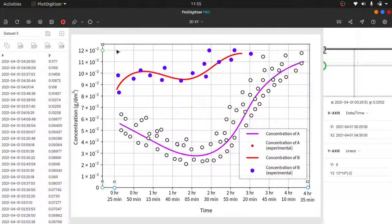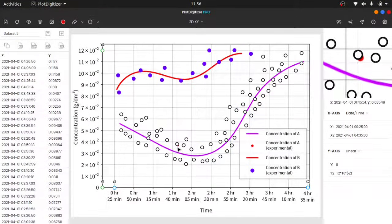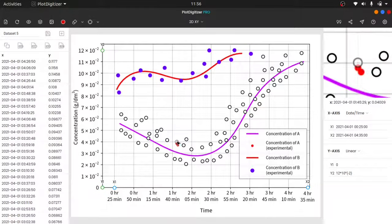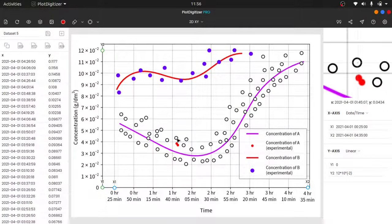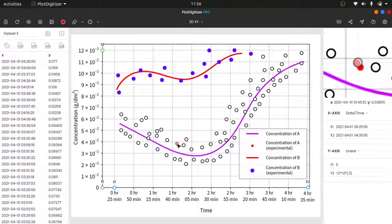Note to consider here, the algorithms are still in the beta phase, so sometimes you might need to do minor adjustments. In our case, there are two points overlapping here, but they are detected as one single point. You can always manually fix such minor corrections.